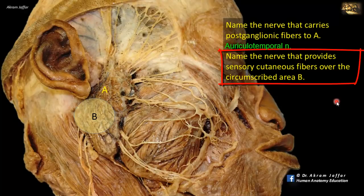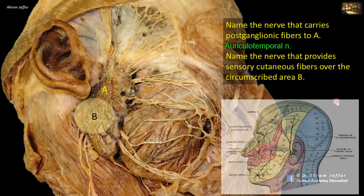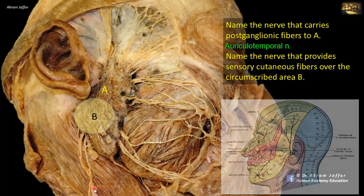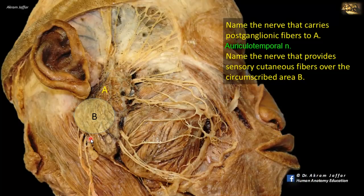Name the nerve that provides sensory cutaneous fibers over the circumscribed area B. Area B overlies the angle of the mandible and the parotid gland. This is the only part of the face supplied by a branch from the cervical plexus — the great auricular nerve — which ascends upwards from behind the sternocleidomastoid muscle.